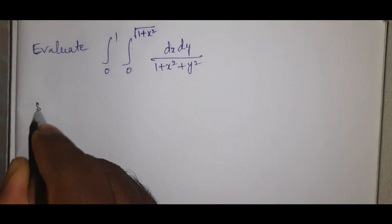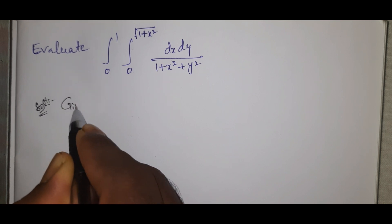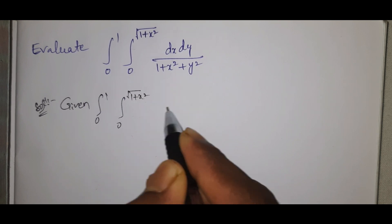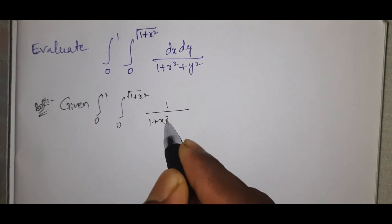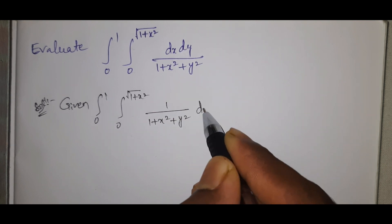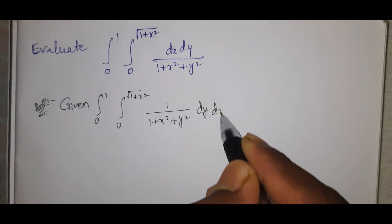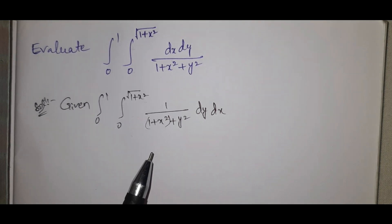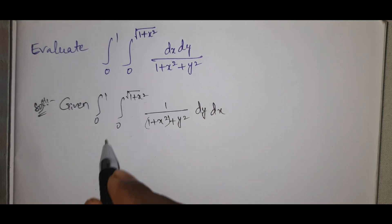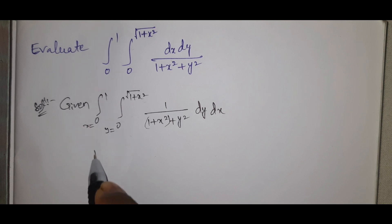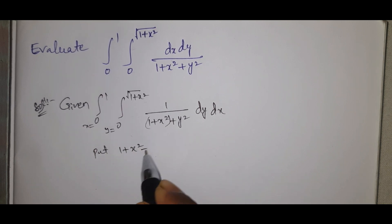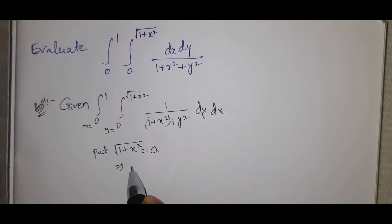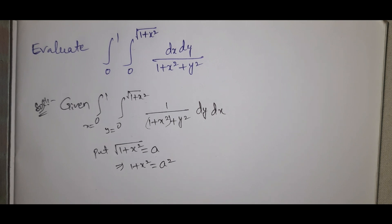For the solution, remember this approach. Since 1+x² appears in both places, for this type of problem we make the substitution: let √(1+x²) = a, which implies 1+x² = a².